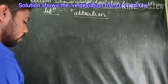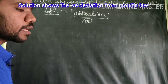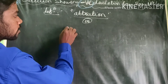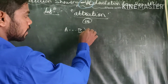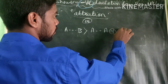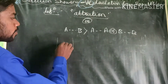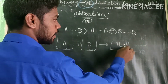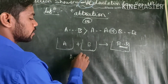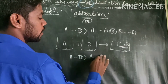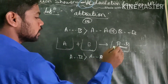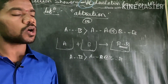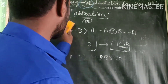One more way of defining it: the solution shows negative deviation when the molecular interaction of AB is greater than that of the pure mixture of AA type or BB type. The AB interaction is stronger than the individual pure component interactions.